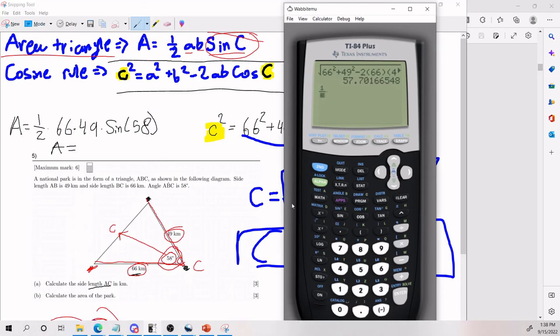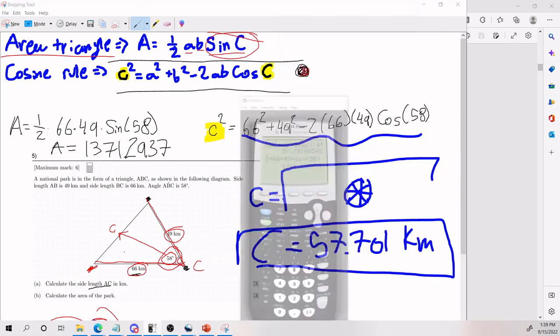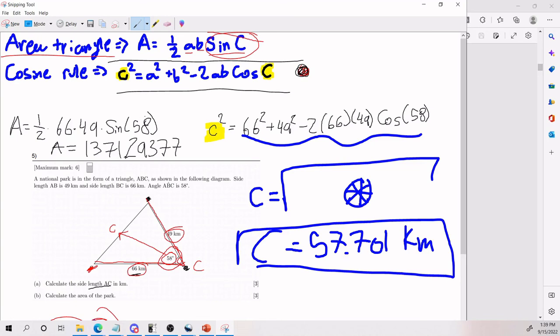Plug into our calculator. Give me a second. Okay. All right, cool beans. We end up with 1,371 point 771. Make sure that you do not forget your units. In this case, it was kilometers squared, squared because it's an area.